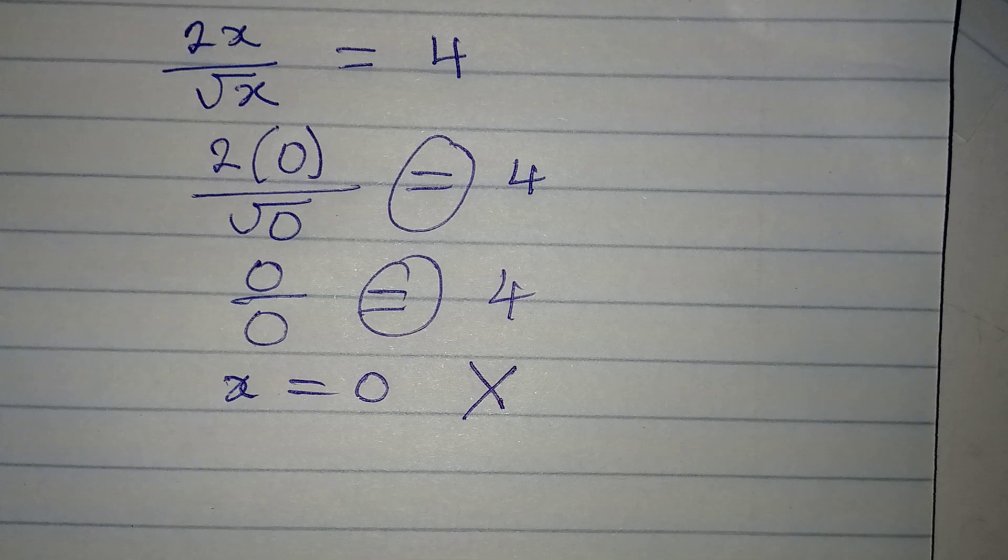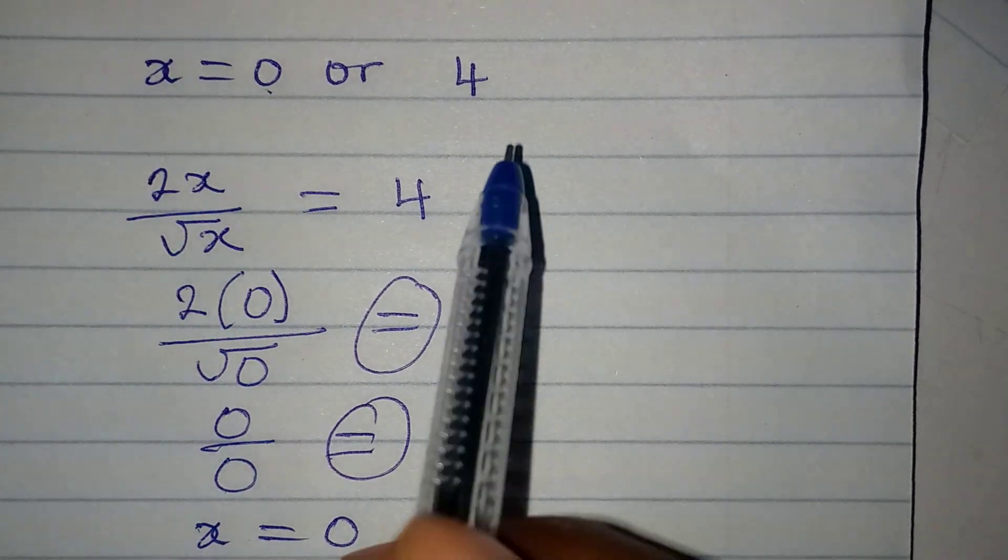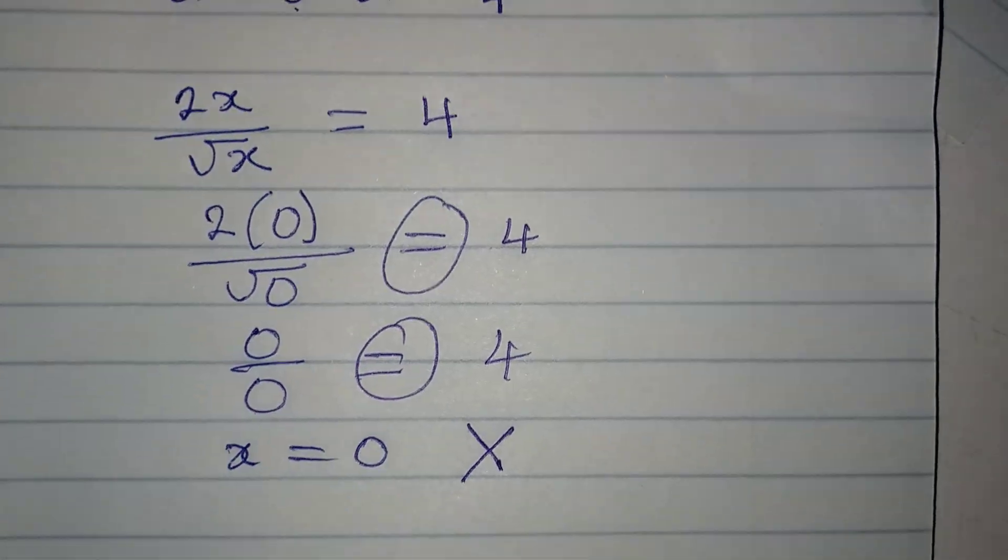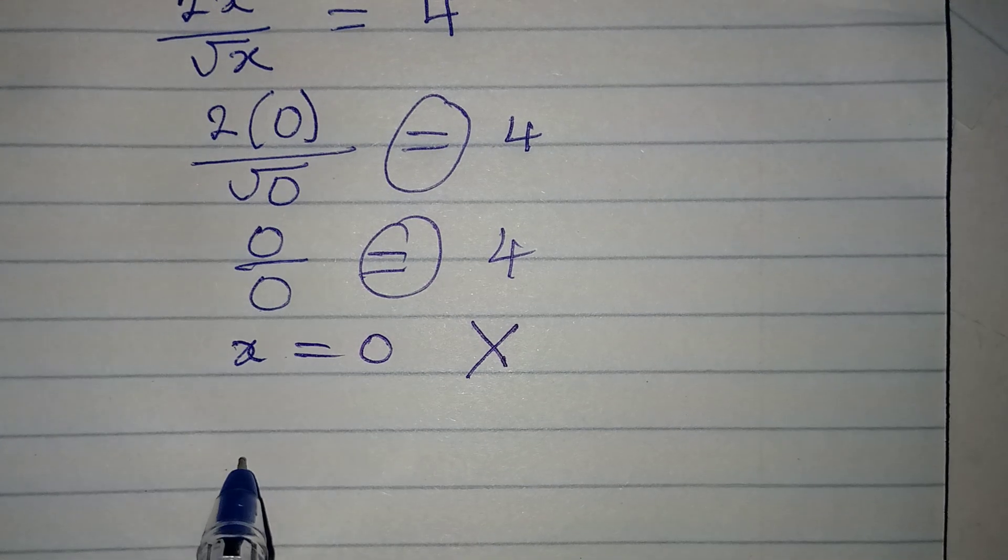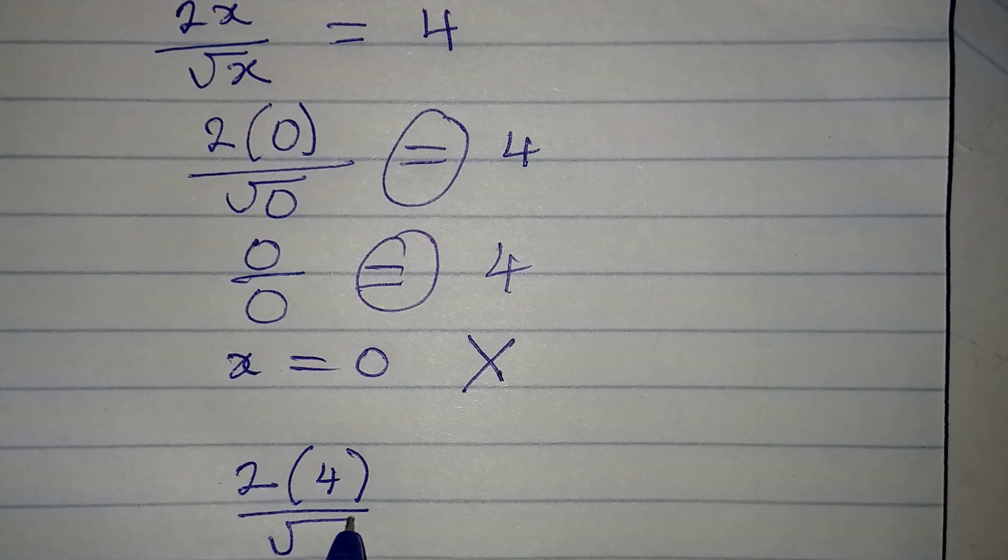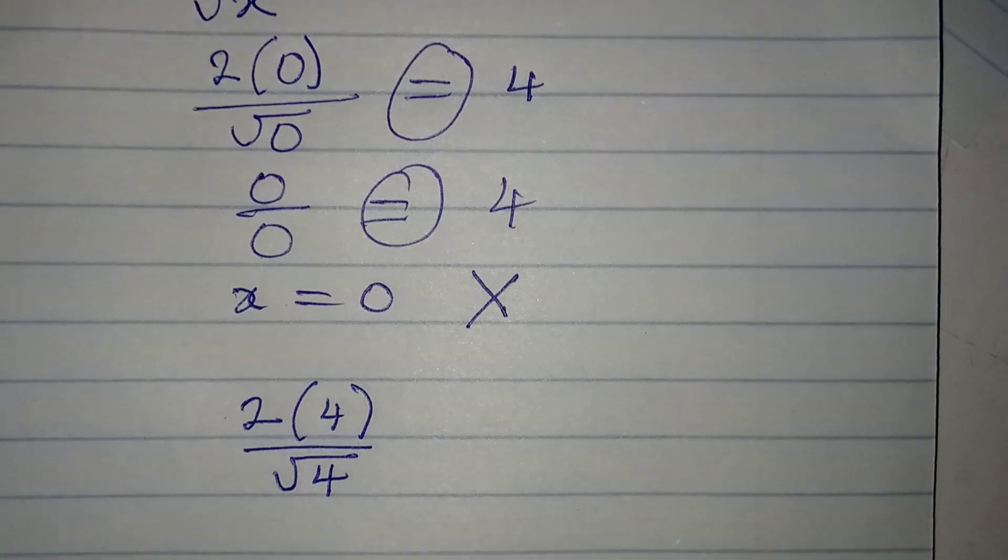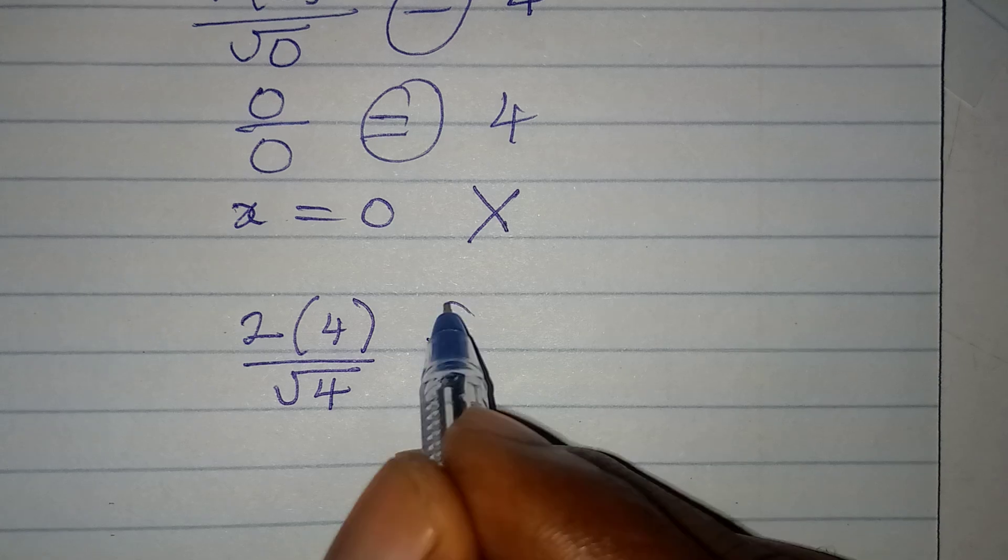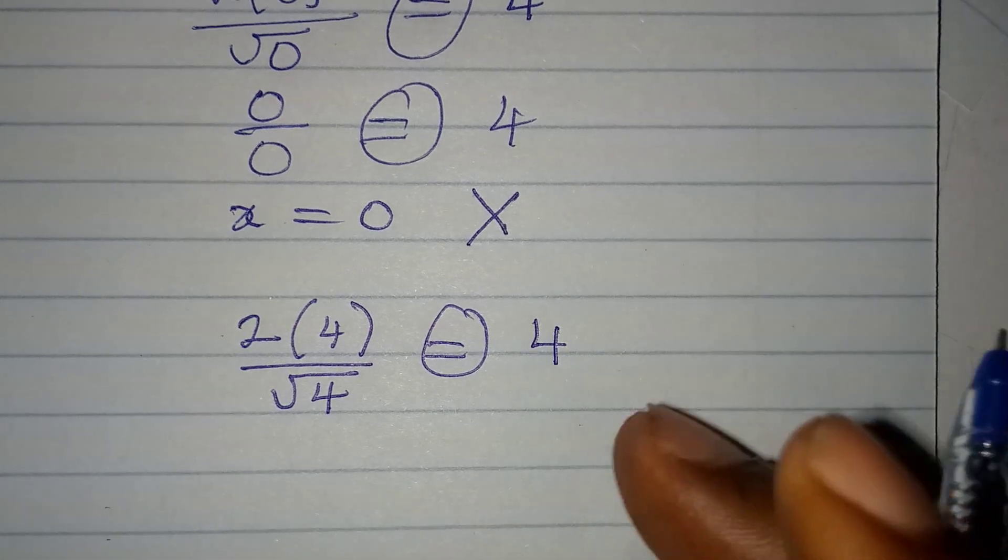Now, let's try the second solution, which is x equals 4. In this case, that means we'll have 2 multiplied by 4 over square root of 4. Will this be equal to 4? Now, the answer will be yes.